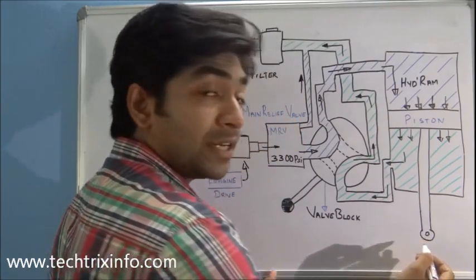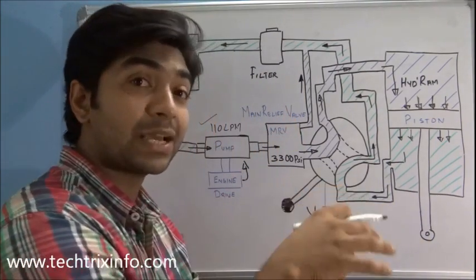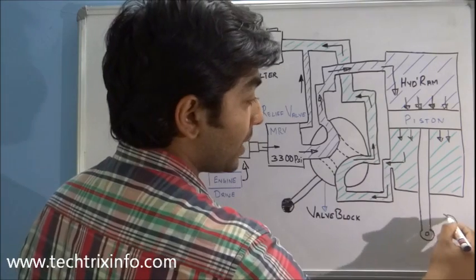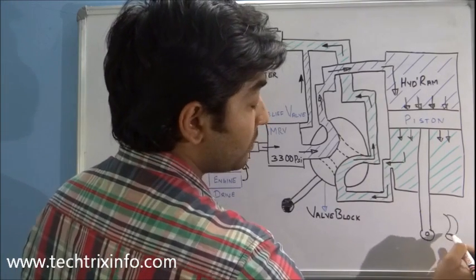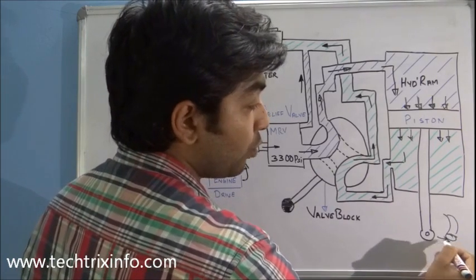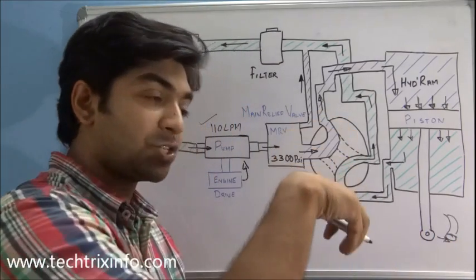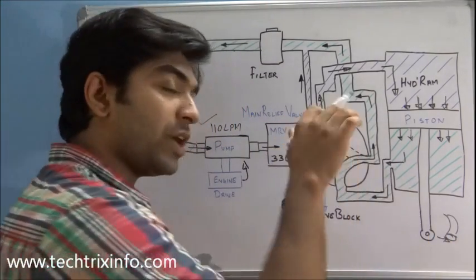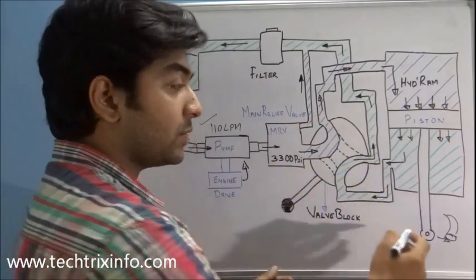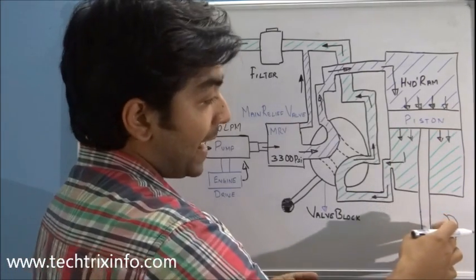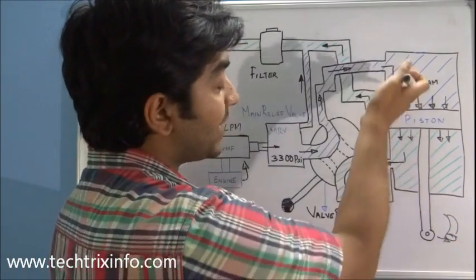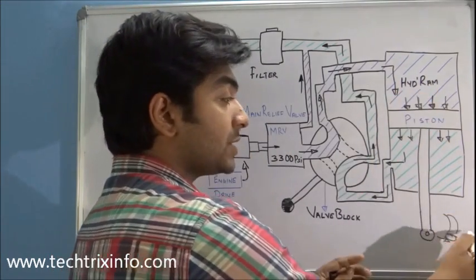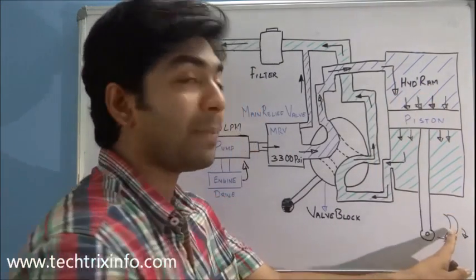The piston rod is connected to the excavator bucket of a backhoe loader machine. This results in the excavator bucket moving. If connected in one direction, it will move downwards and start the digging process. When we need to move it upwards — to lift the piston rod for the reverse motion of the bucket — we perform a different operation.